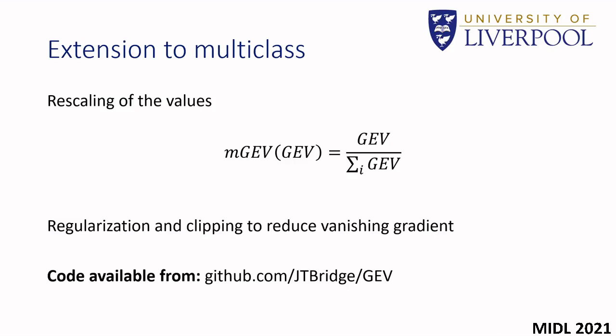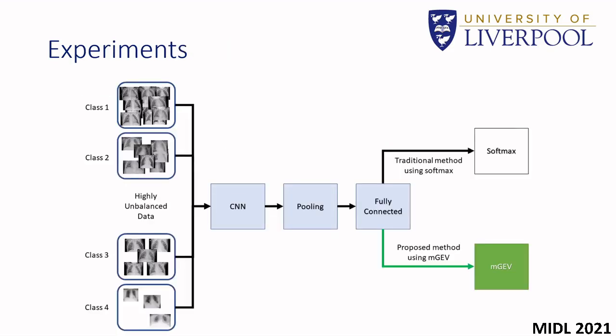We have made code available to implement the activation at the link shown. This produces a method which is very easy to implement, requiring just a simple replacement of the final activation layer with our proposed layer. As our method changes the activation function only, other methods such as resampling and focal loss could be used in conjunction with our method. This may produce even better results.